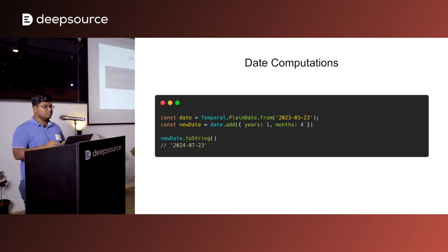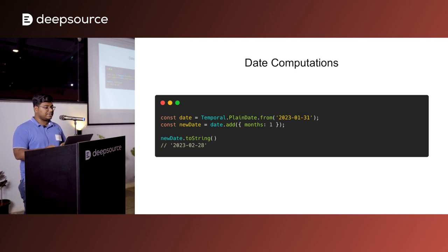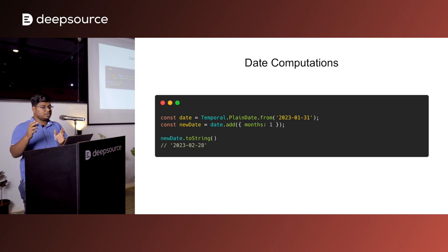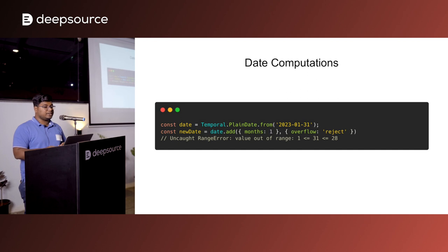Date computations have also been made very easy. If you want to add dates, there's a date.add function where you just pass an object specifying what to add. Here, for March 23rd, I'm adding one year and four months, and it returns the correct date. In another example, for January 31st adding one month, it smartly caps at February 28th rather than returning an invalid February 31st. But if you don't want this implicit capping and instead want an error when an invalid date would result, you can pass an overflow: 'reject' option — in that case, adding one month to January 31st will throw an error saying February 31st doesn't exist.